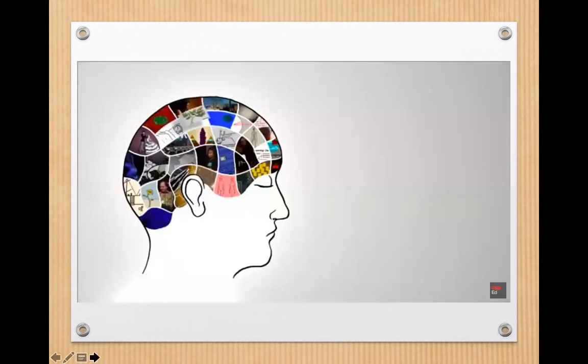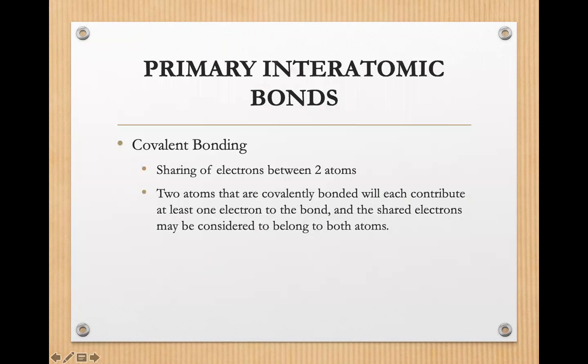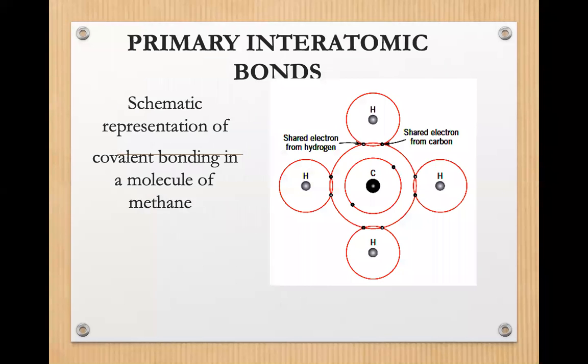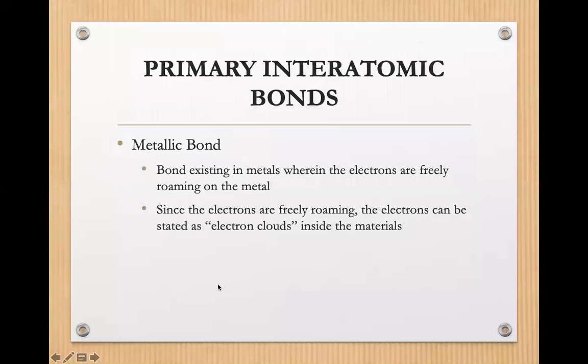Covalent bonding is the sharing of electrons between two atoms. Two atoms that are covalently bonded will each contribute at least one electron to the bond, and the shared electrons may be considered to belong to both atoms. This is a schematic representation of covalent bonding in a molecule of methane. You have this illustration of bonding between hydrogen and carbon, with the shared electron shown here.